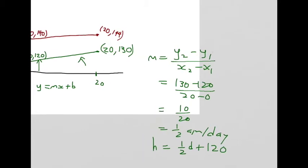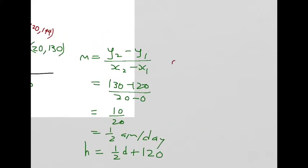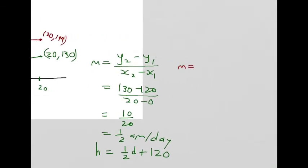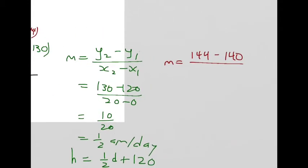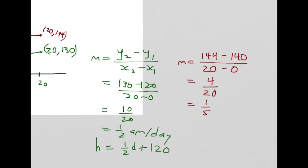Now let's do the same thing for the older tree. The slope would be 144 minus 140 all over 20 minus 0. That gives 4 over 20 which reduces to 1 over 5, which is about 0.2 centimeters per day.